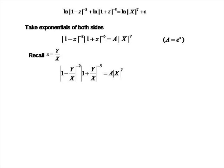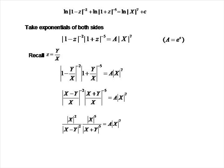Writing the ones as X/X, each term on the left-hand side becomes a single fraction: |X minus Y|/X all to the power of minus 2, times |X plus Y|/X all to the power of minus 5, equals A times |X|^7. Raising terms to negative powers means taking the reciprocal to positive powers. The |X|^7 factor on the left-hand side then cancels with the |X|^7 on the right-hand side, leaving (X minus Y)² times |X plus Y|^5 equals a constant A prime, where A prime is 1/A.